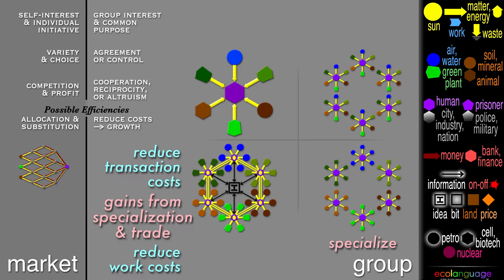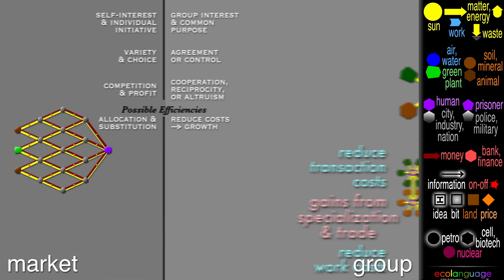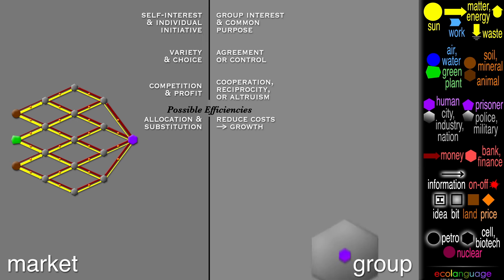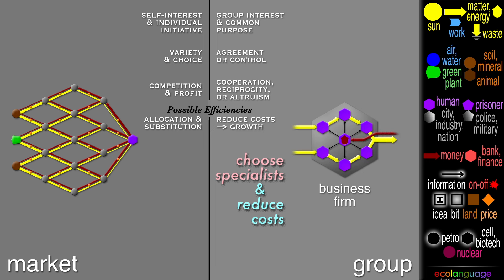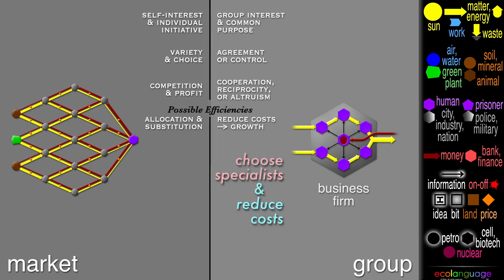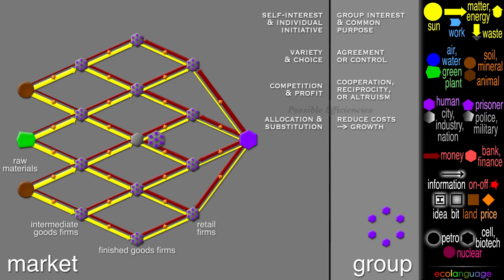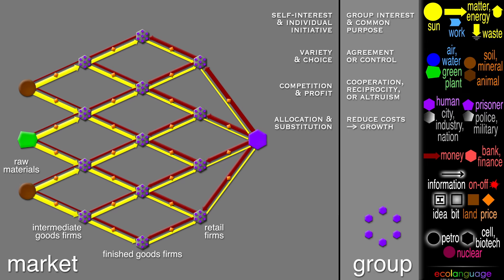This combination can apply to almost every group we have pictured. For example, in a business firm, the boss will choose the specialists to hire for each step in the process, and then reduce costs among them, to make more product and revenue. This is a main source of growth in the market system. Also in the market, the firms specialize to trade with each other, aided by allocation and substitution.